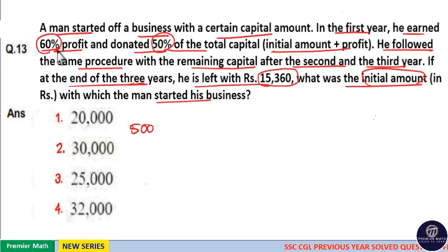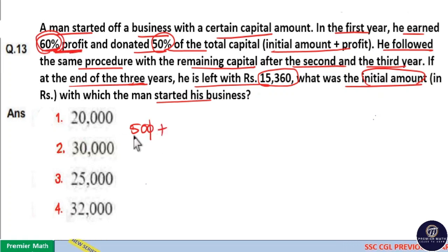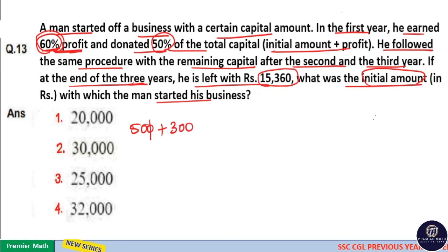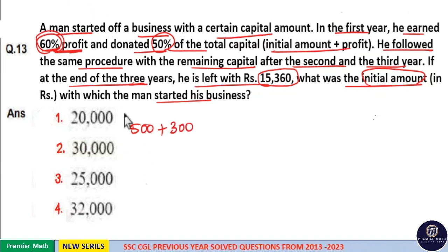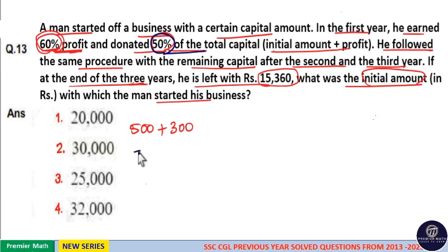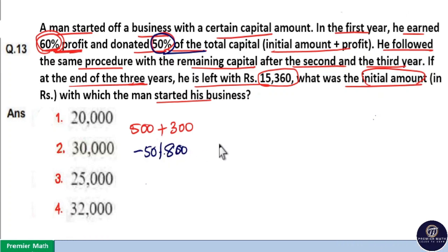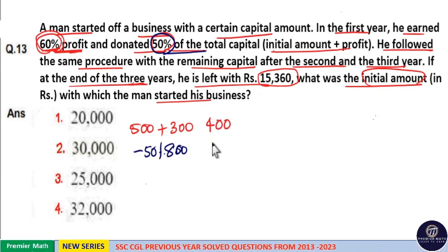He earned 60% profit in the first year. 10% of 500 is 50, so 60% profit is 50 × 6 = 300 rupees. He donated 50% of the total capital to charity. 50% of 800 is 400 rupees. So the remaining capital for the second year is 400 rupees.